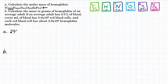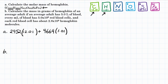So 2,952 multiplied by the molar mass of carbon — looking at our periodic table, that is 12.01. For hydrogen, there are 4,664 atoms in each molecule, multiplied by the molar mass of hydrogen, which is 1.01. For nitrogen, 812 atoms, times 14.01.